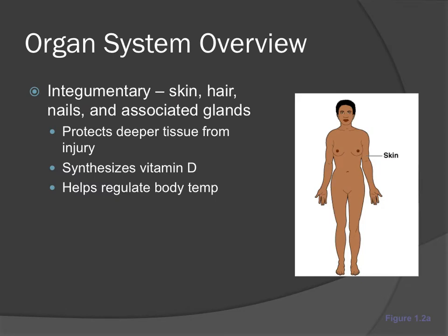Now let's go over an organ system overview — very basic for each organ system. We will have an individual chapter on each organ system in this course. The integumentary system consists of your skin, hair, nails, and associated glands — that is the anatomy of the integumentary system. Our skin takes a lot of abuse in order to protect deeper tissue from injury.